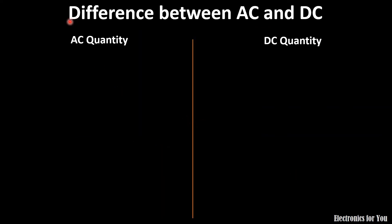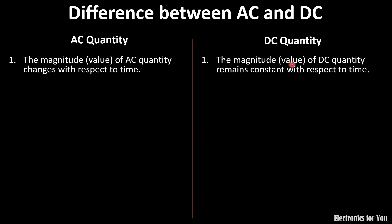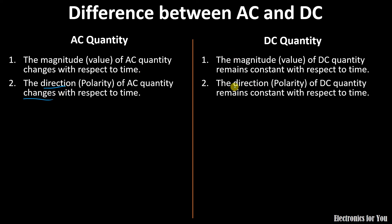Let us see what is the difference between AC and DC quantity. I am not explaining the difference between AC voltage or AC current. I am directly explaining the difference between AC quantity and DC quantity. In case of AC quantity, the magnitude and direction of the AC quantity changes whereas in DC quantity, it remains constant. The direction will remain constant with respect to time.